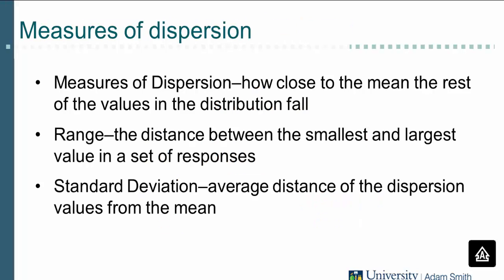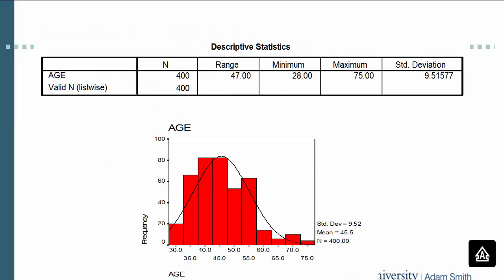In addition to central tendency measures, we also report measures of dispersion, which capture how much the values reported vary from each other. One dispersion measure is range — the difference between the maximum value and the minimum value in your sample. Another typically reported measure is standard deviation, which captures the average distance from the mean. Here is another summary of descriptive statistics showing the dispersion measures. In my sample of 400 respondents, the youngest was 28 (minimum) and the oldest was 75 (maximum), and on average they varied by 9.5 years from the mean value.